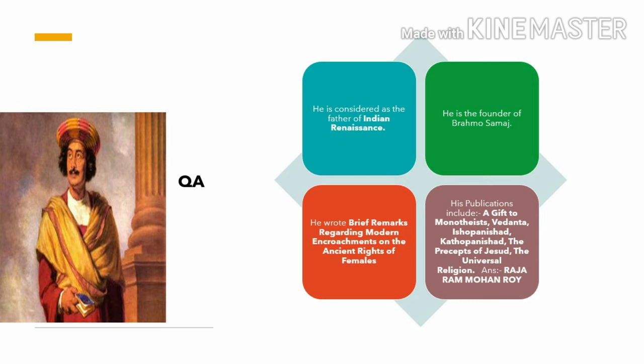Next question is about a Renaissance leader. He is considered the father of the Indian Renaissance and the founder of Brahma Samaj. He wrote brief remarks regarding modern engrossments on the ancient rites of females. His publications include A Gift to Monotheists, Vedanta, Ishopanishad, Kathopanishad, The Precepts of Jesus, and The Universal Religion. The answer is Raja Ram Mohan Roy.